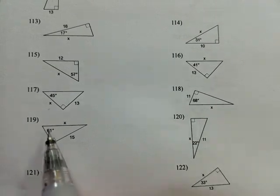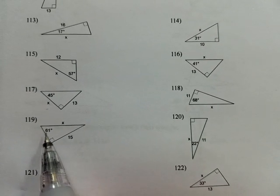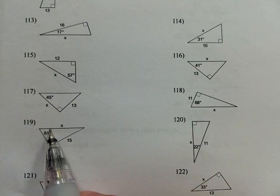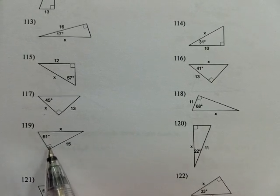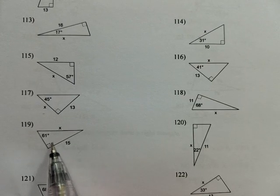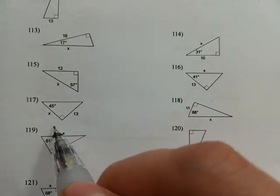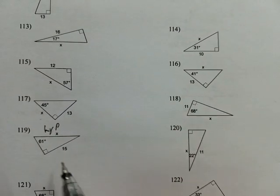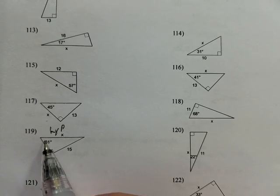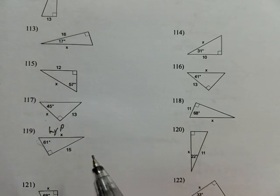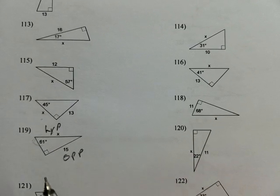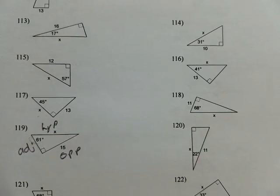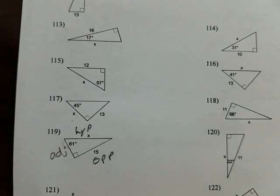So we use the information that this 61 degree angle, we can find a decimal with the right trig function. First, we're going to label the triangle like we did before. Find the right angle, label the hypotenuse across from that, and then look at the reference angle, which is 61. Across from that is opposite, and next to it is adjacent. Now we have to figure out what function is going to be useful.